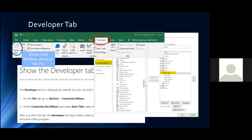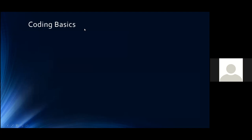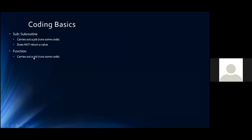To start with some coding basics. A Sub, short for subroutine, carries out a job or runs some code but does not return a value — it does some actions without returning a value. A Function also carries out a job or runs a piece of code, but its main difference is that it returns a value — it can return a value to where it was called in code, and can be used in almost all cases instead of a subroutine.